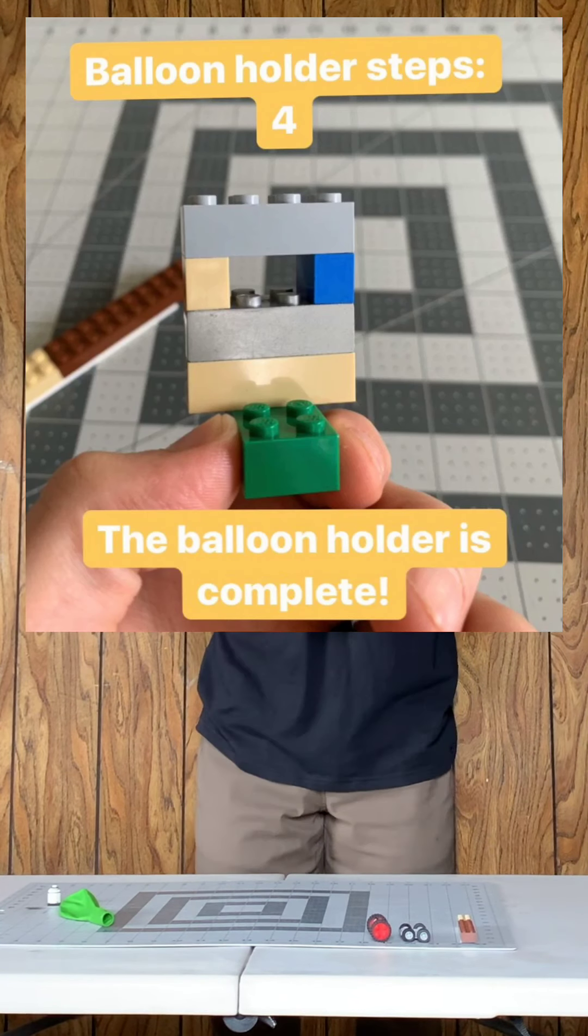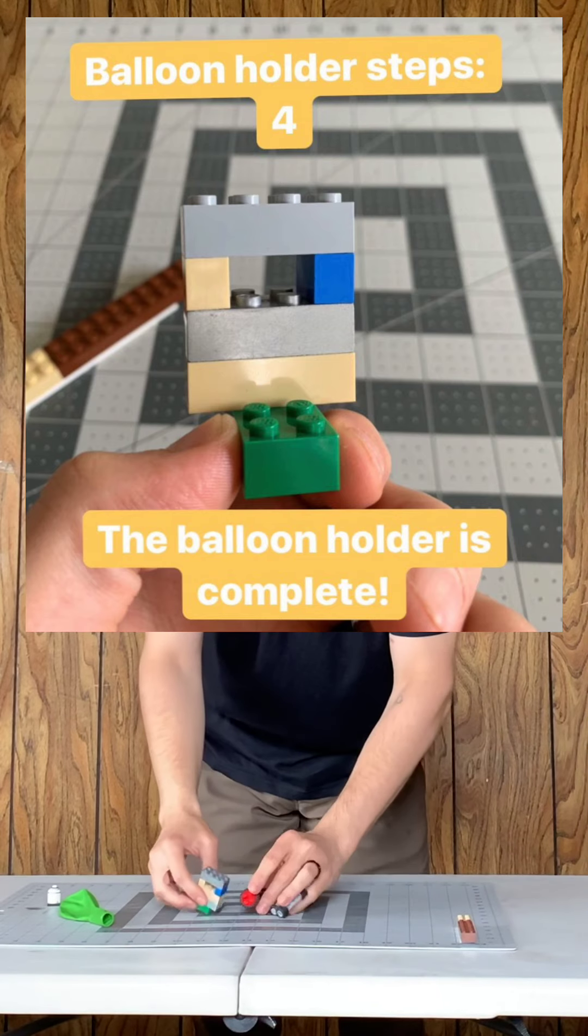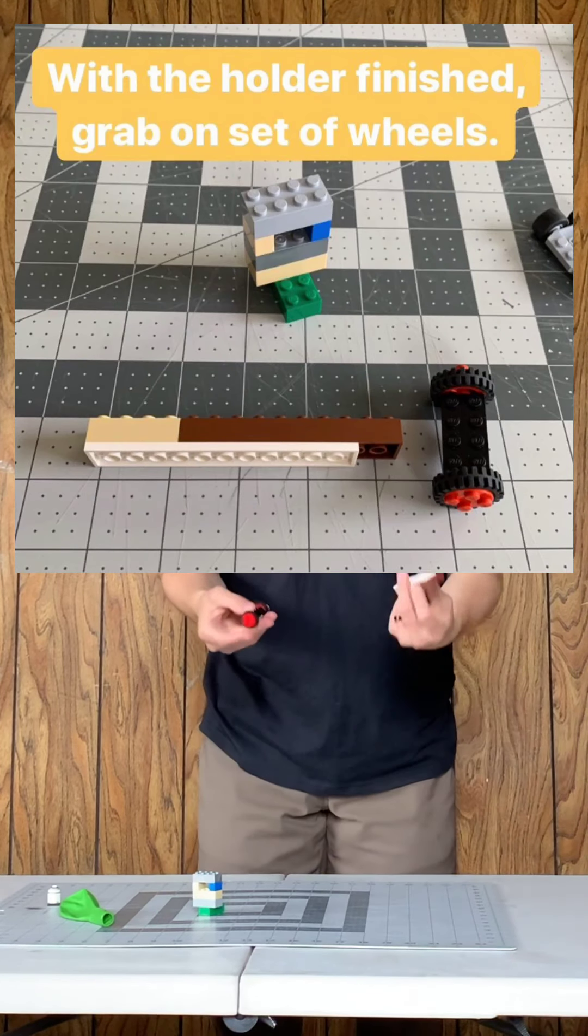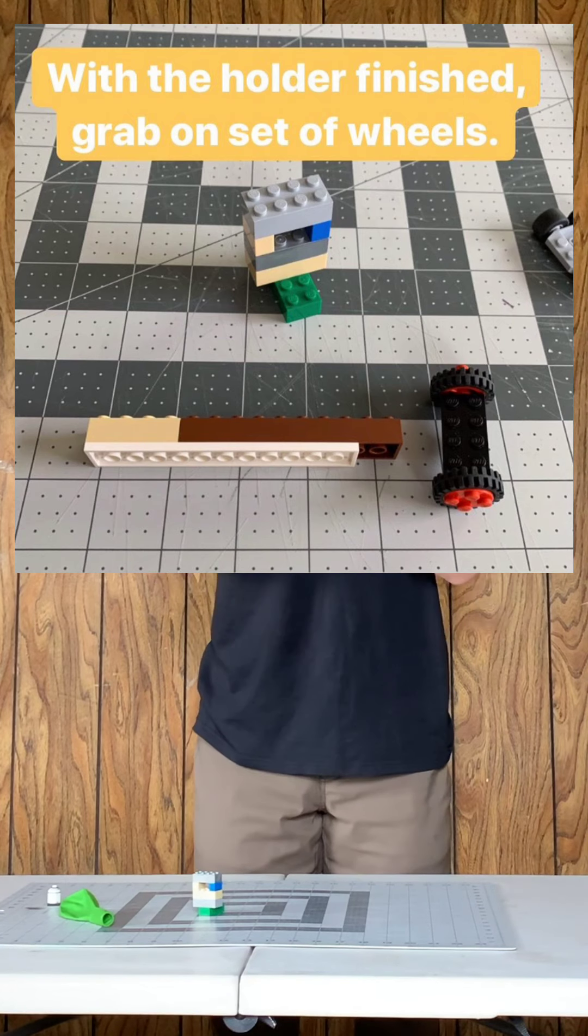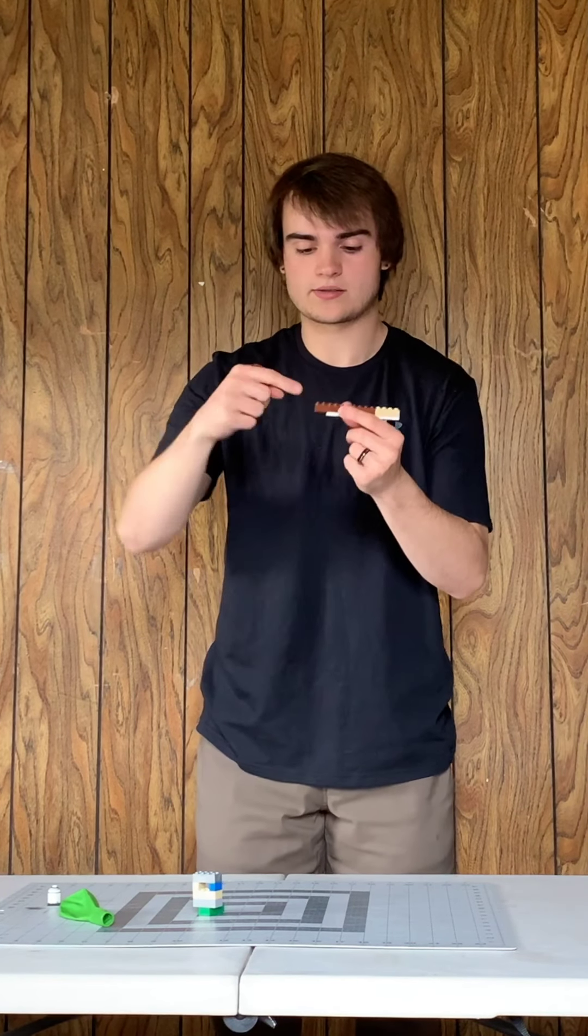So that's ready. So now we're going to grab our wheels. The wheels are extremely simple. That overhang I left, so it's four blocks on the edge, I'm going to connect this set of wheels to it.